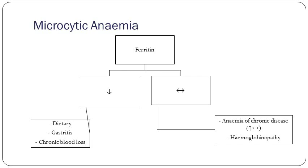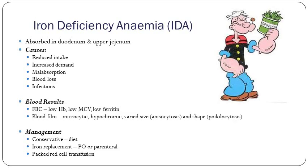If someone's got a low MCV, the next thing is to request a ferritin. If ferritin is low, potential causes could be dietary, gastritis, chronic blood loss from GI malignancy, or inflammatory bowel disease. If ferritin is normal or raised, you have anemias of chronic disease and hemoglobinopathies. Just briefly on iron deficiency anemia — iron is absorbed in the duodenum or upper jejunum.